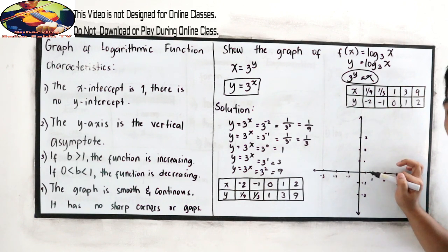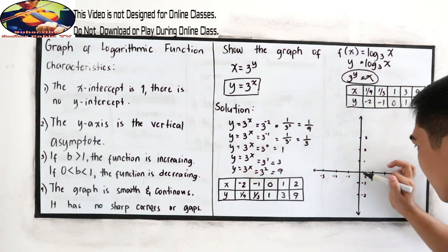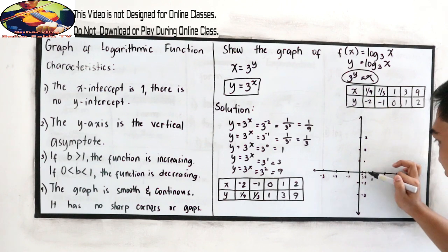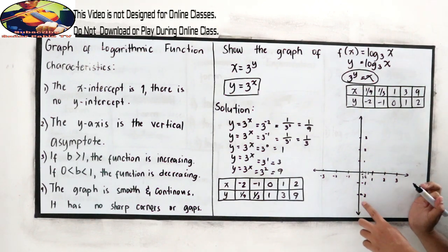Next, 1 over 9. This is our 1 half, 0.5. Then 1 third. This is smaller than 1 half, so this would be 1 third. So 1 over 9 is here. Then go into negative 2.